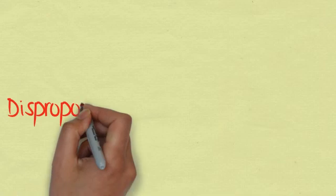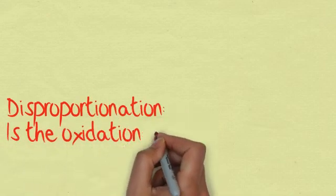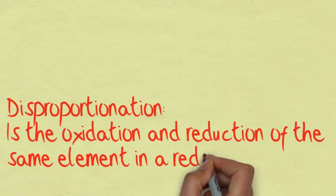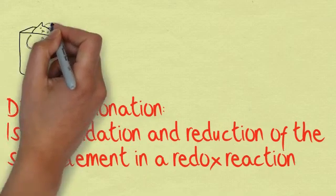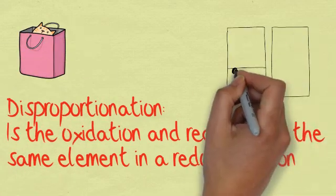Disproportionation is the oxidation and reduction of the same element in a redox reaction. And this is a very common exam question.